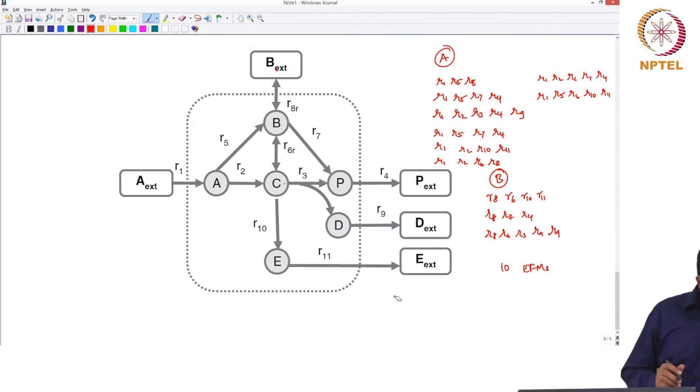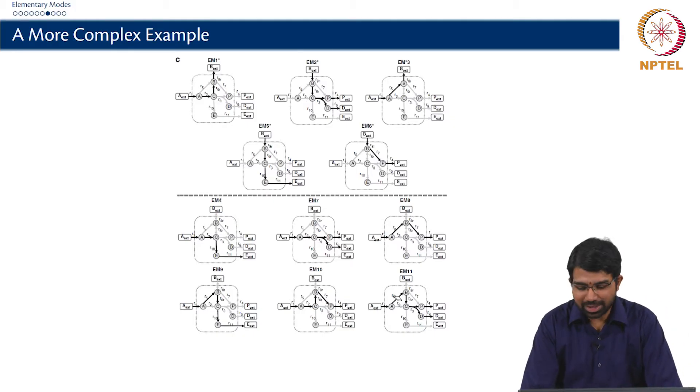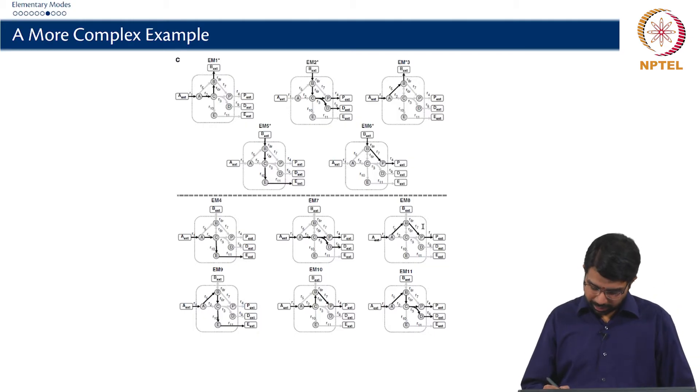So now if you see which of these are elementary modes and which of these are extreme pathways, all of these are elementary flux modes. Which of these are elementary pathways as well? The ones at the top, because if you add them up, you can get those on the bottom. EM8 is EM3 plus EM6. You add these two, you get this.